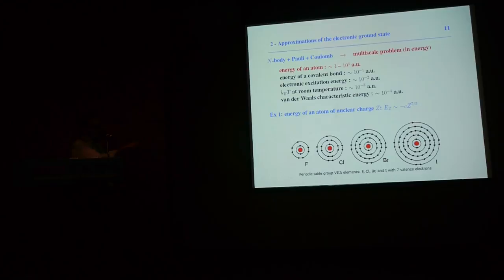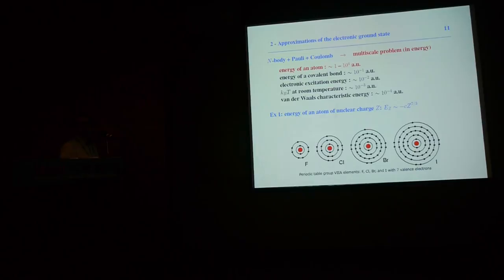This power of 7/3 comes from the fact that we have fermions and the Pauli principle: electrons cannot all gather in the ground state, so they occupy shells. This explains the scaling Z^(7/3).